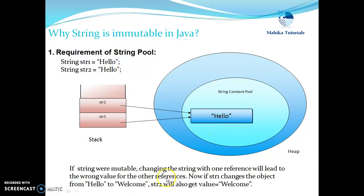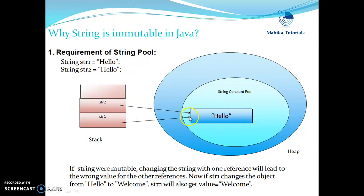Now, if strings were mutable, then changing the string through one reference would lead to the wrong value for other references as well. For example, if we change the object from "hello" to "welcome" for str1, then str2 would also get the value "welcome", because both are referring to the same memory location. So, to make the string constant pool work correctly, strings are immutable — since multiple reference variables can refer to the same object, whenever any operation is applied, a new resultant string object is created but the original is not changed, because other reference variables might also be referring to the same object.